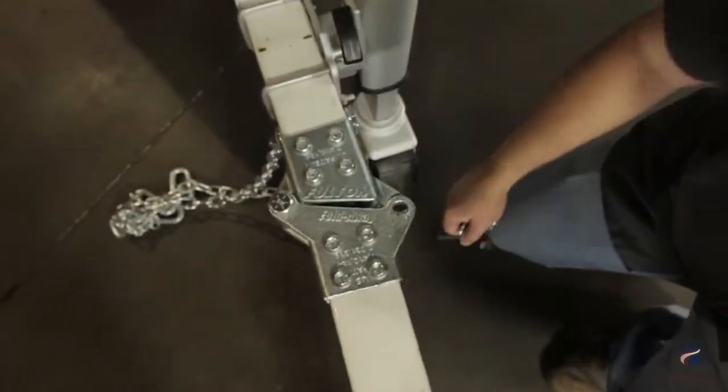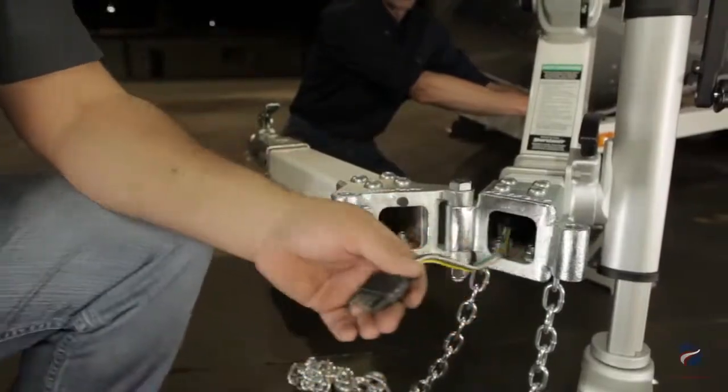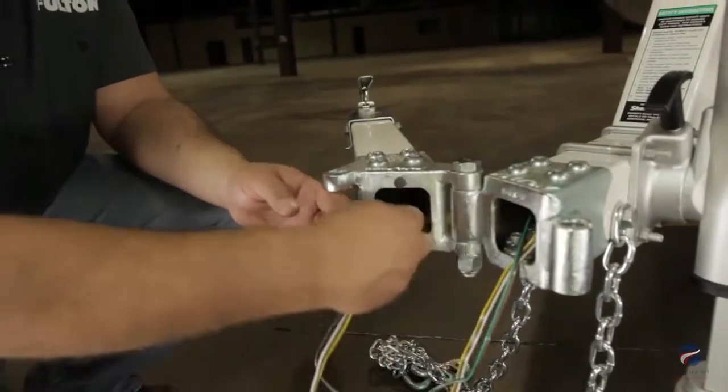Remove the hinge pin and make sure that your swing tongue pivots correctly. Reroute the wires and brake lines through the swing tongue.